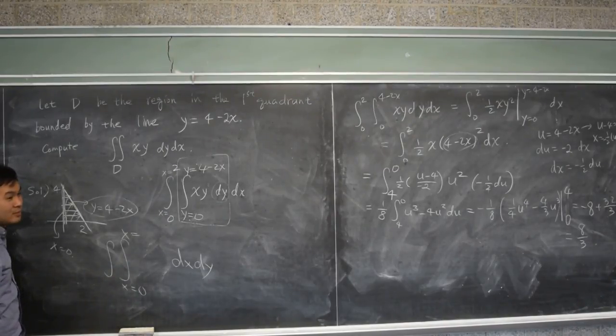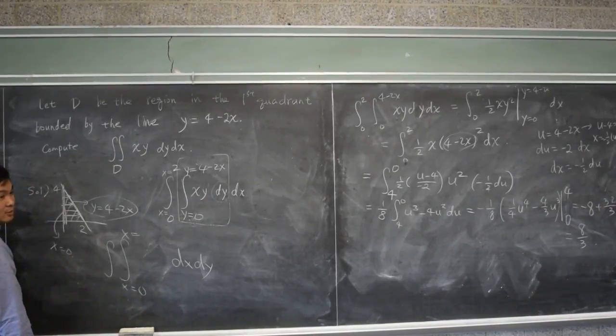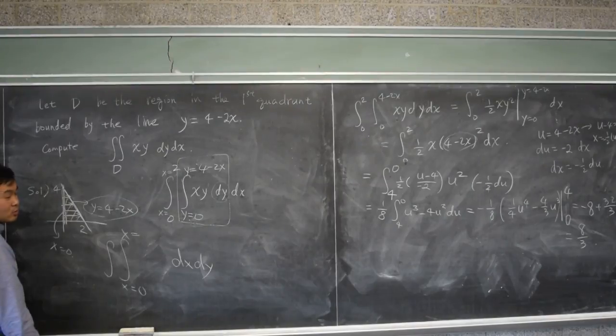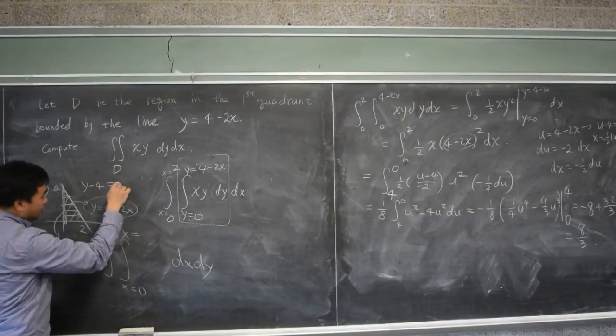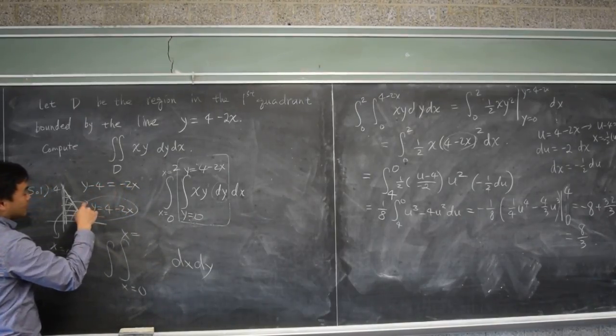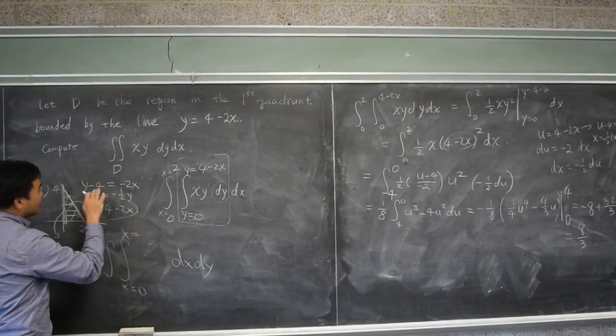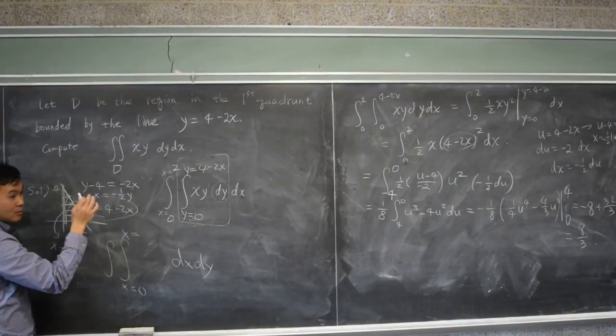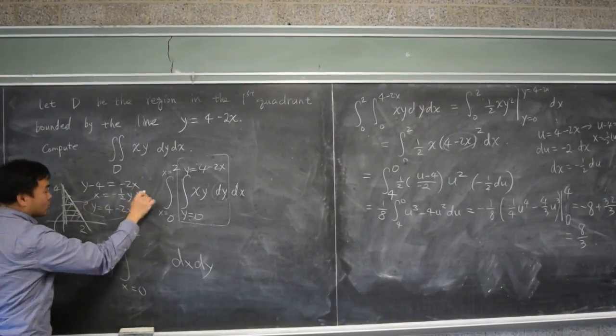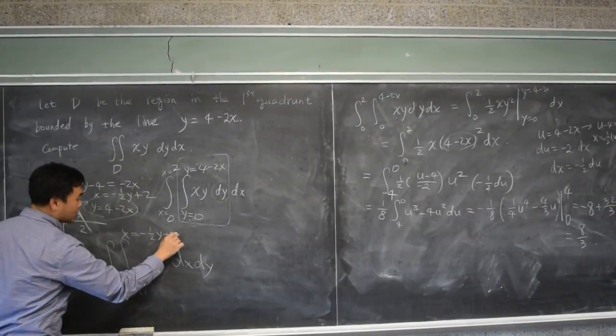Can you solve that for x? You solve this for x and you get y minus 4 equals negative 2x and then if you divide by negative 2, x is equal to negative one half y. Negative 4 divided by negative 2 is? 2. Positive 2. So it's negative one half y plus 2.